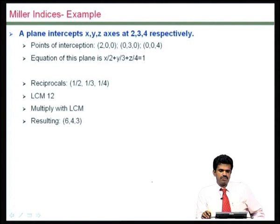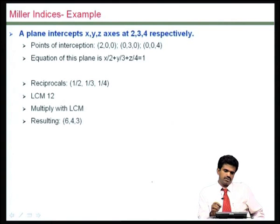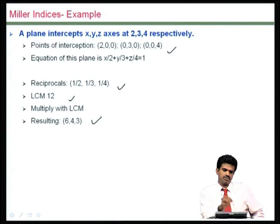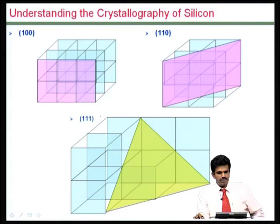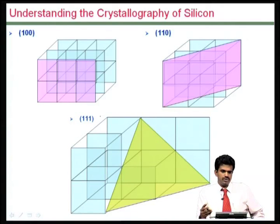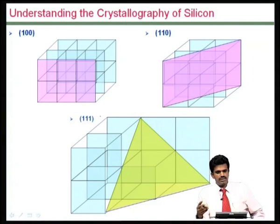Here is one more example: if we have intercepts at points 2, 3, 4, we can find the reciprocals, find the LCM, and find the resulting Miller indices accordingly. Going back, it is possible that the surface of a wafer is aligned with any one of these planes when purchased, and hence different types of wafers are available.